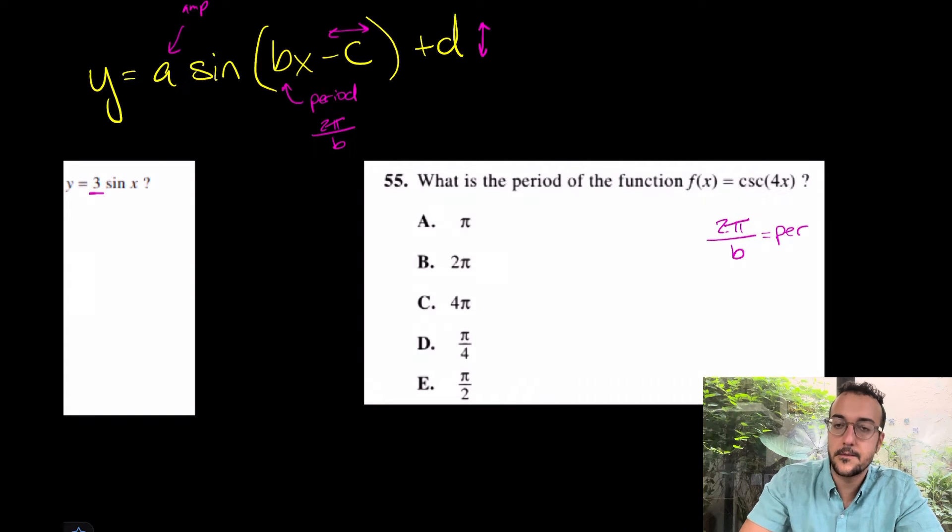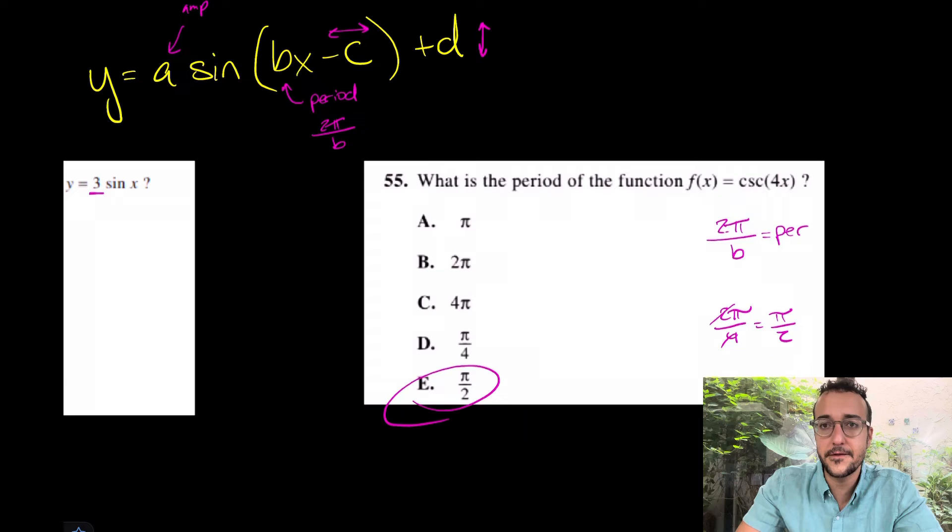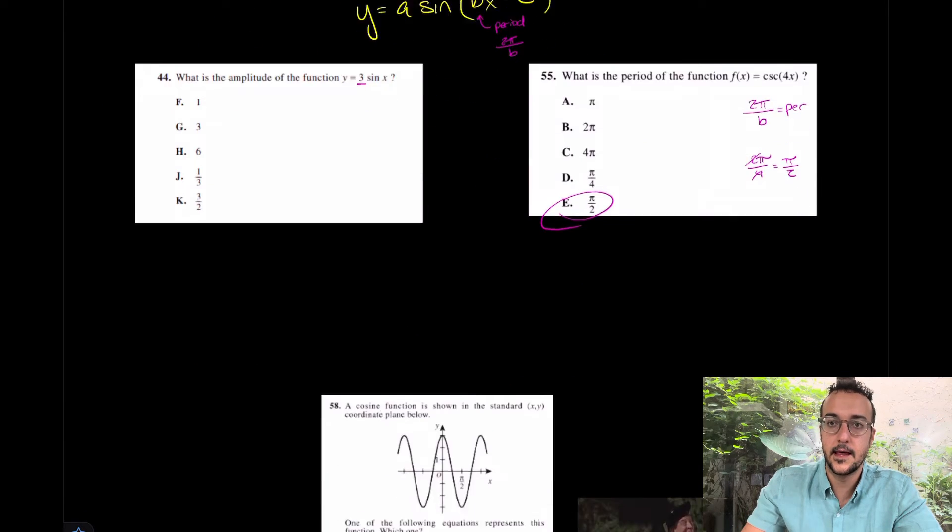In that case, what do you think? 2π over 4 is π over 2. Just simplified. I like E. That's a number 55 on the ACT. They think that that question is hard. It's a joke. Let us continue.